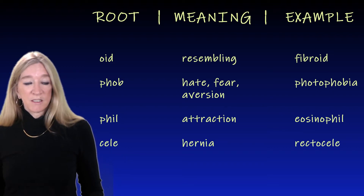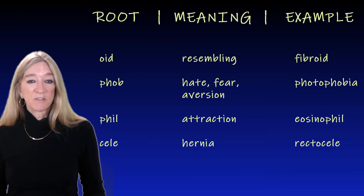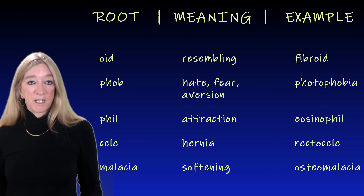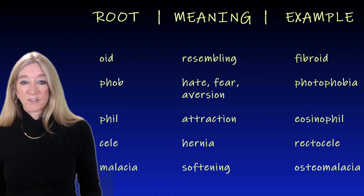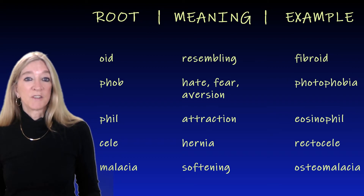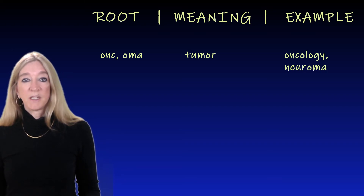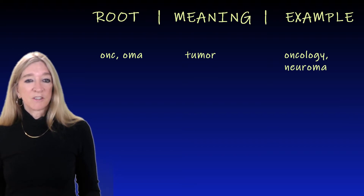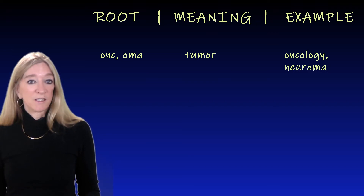The next root, 'cele,' meaning hernia. A rectocele is herniation of the rectum. The next root, 'malacia,' means softening. An example is osteomalacia, softening of the bones — and by now you probably know that 'osteo' is the root word for bone. The next roots, 'onc' and 'oma,' meaning tumor. Oncology is the study of tumors, and neuroma is a tumor composed mainly of nerve cells.